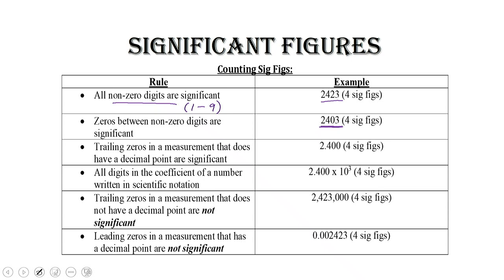— I have 4 sig figs, and this zero, because it's sandwiched in between non-zero digits, is significant. Here's the idea: zeros are just placeholders — they hold a place and have no value. So because zeros have no value, they are not significant to your measurement. But if you have a zero that is in between non-zero digits, it's a placeholder that, because it's sandwiched in between real numbers, becomes significant.